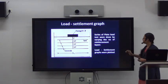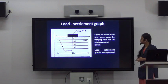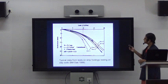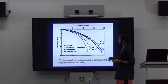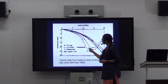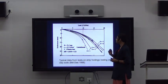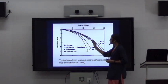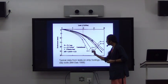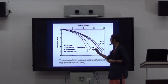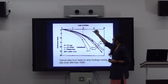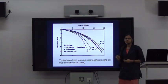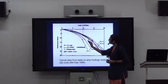The result of the plate load test is a load-settlement graph. The dotted curve corresponds to unreinforced soil, while the other curves are for reinforced soil. As we increase the number of layers — n equals 1, 2, 3, 4 — the curve shifts to the right, meaning the soil is able to take more load.